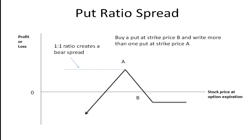Likewise you can do this with put options, referred to as a put ratio spread. Here we're going to buy a put at a strike price of B and then write more than one put at a strike price of A. If you have a one-to-one ratio it just flattens out and you get a bear spread. Here it's a two-to-one ratio, though it could be three to one, four to one, or five to one. It's called a ratio spread because the number of options you buy differs from the number you write. Again it's a neutral strategy — you're looking for the price to hover around A with little expected volatility.